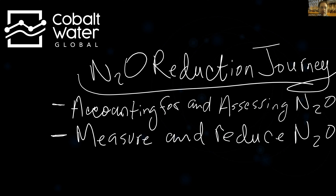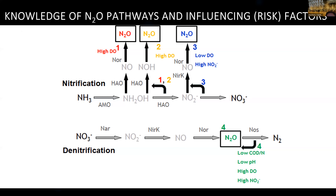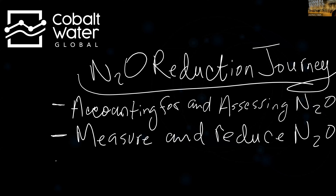Once we're able to measure what the current emissions are, we can then implement the recommended control actions from the opportunities that were identified, and measure what the reduction is before and after implementing the recommended control strategies. So we get to measure not just to see what the current emissions are, but also what the reduction is. Now, once we've measured and reduced our N2O, we need to be monitoring the process.